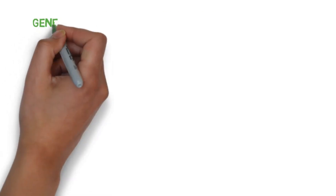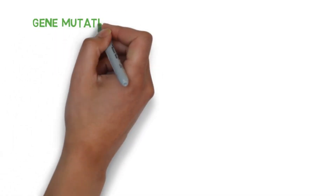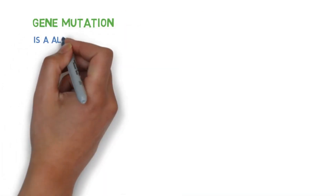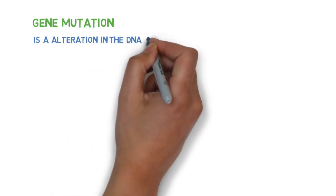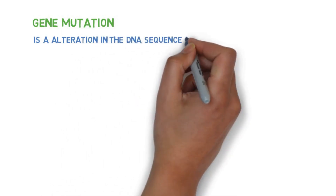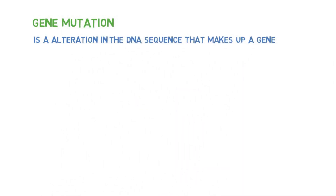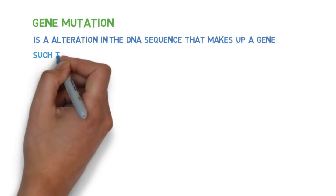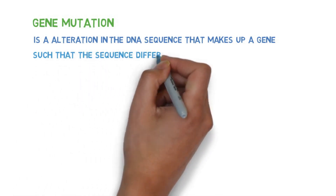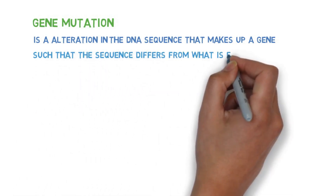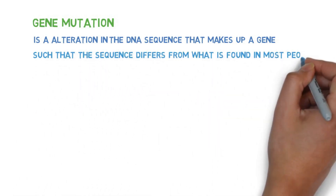Gene mutation is what is happening in most people. Gene mutation is an alteration in the DNA sequence that makes up a gene, such that the sequence differs from what is found in most people.